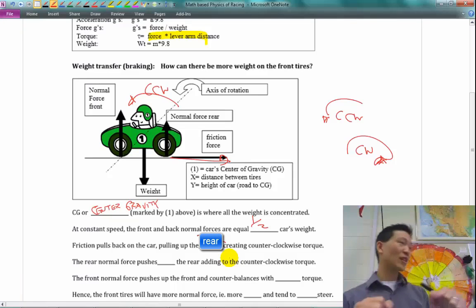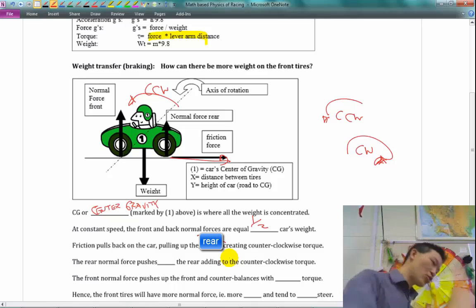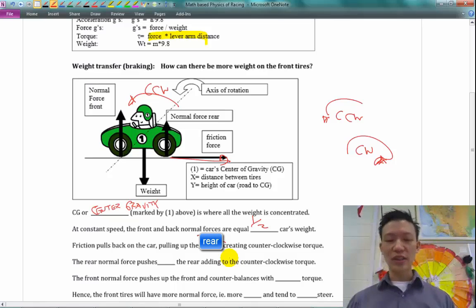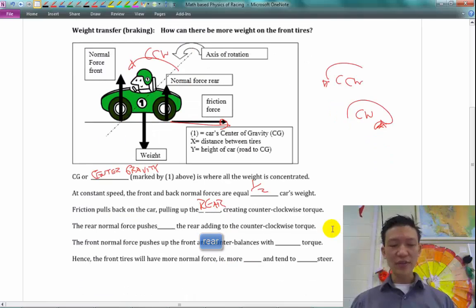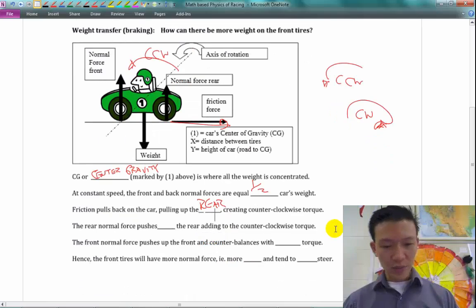So if you're going into a turn too fast and you slam on the brakes, you're going to start to lose grip on your back tires. It's actually easy to create what's called oversteer condition, because you're losing that grip on the back tires.